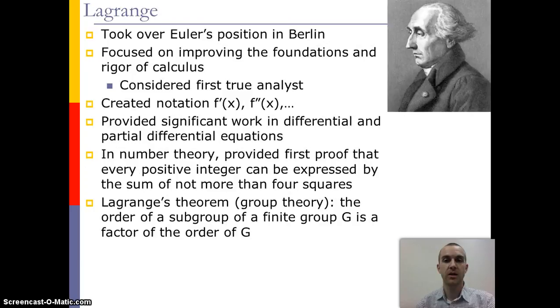Now the last major mathematician we'll talk about is Lagrange. And Lagrange took over Euler's position in Berlin. He focused on really trying to improve the rigor of calculus and is considered our first true analyst. He created the notation we use for the derivatives with F prime and F double prime and F triple prime. He did a lot of work in differential and partial differential equations.